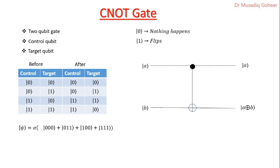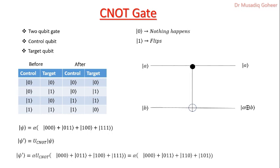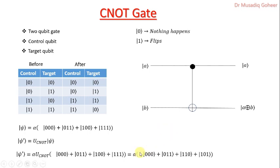For more understanding, let us take an example with a random state. We suppose that the first qubit is the control qubit across all four states — these are 0, 0, 1, and 1. The central (second) qubit is the target qubit. When the control qubit is 0, nothing happens to the target qubit, as we can see in the first two terms. In the third term, the control qubit is 1, so the target qubit changes from 0 to 1. In the fourth term, the control qubit is 1 and the target qubit, which was 1, is converted to 0. This was a brief introduction to the control NOT gate.